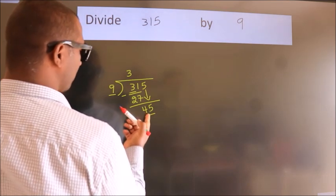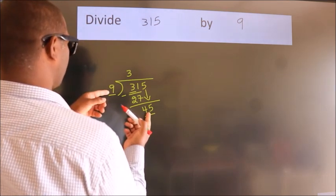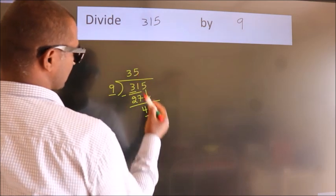When do we get 45? In 9 table. 9 fives, 45.